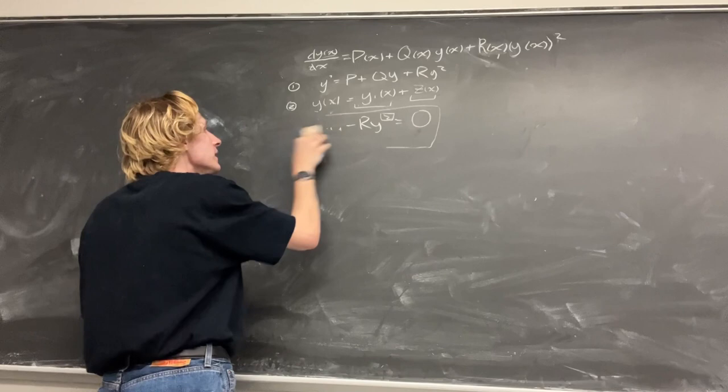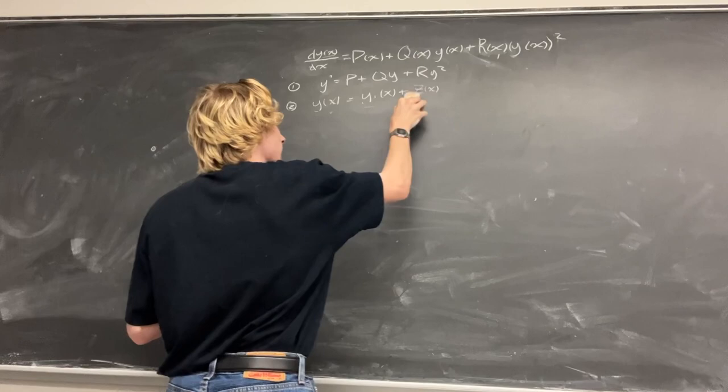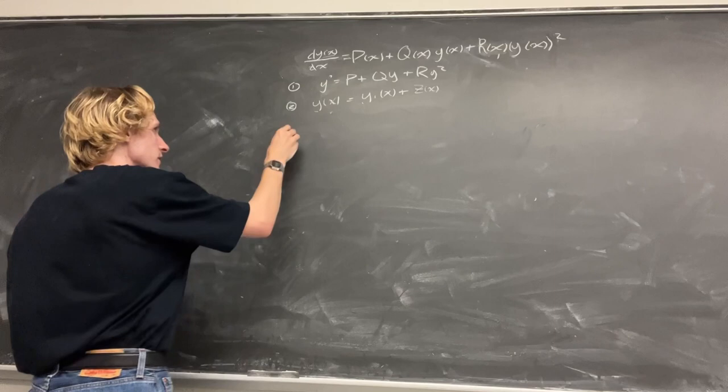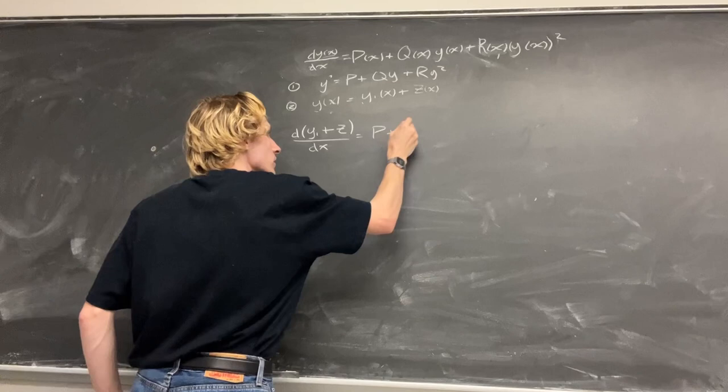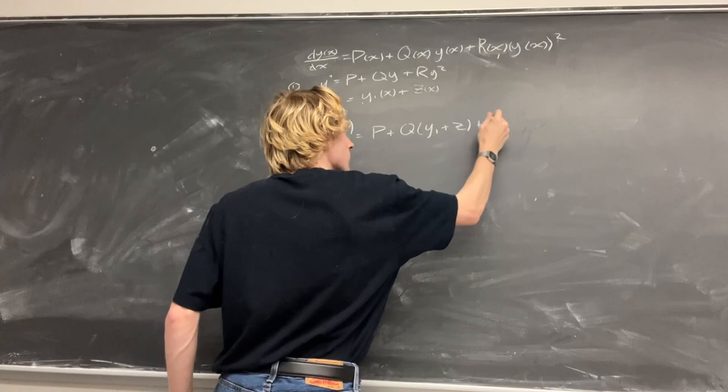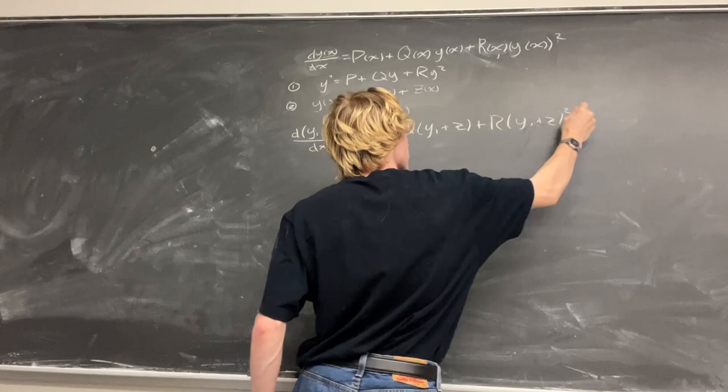So how we get to this equation is by simply implementing equation two and substituting this equation into one. What we do is we say the derivative of the particular solution plus our homogeneous z with respect to x